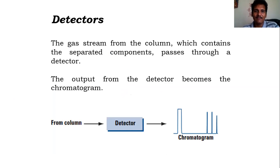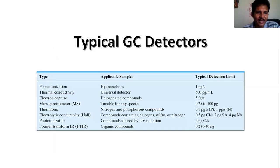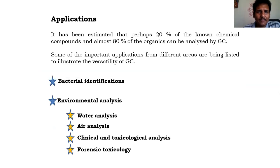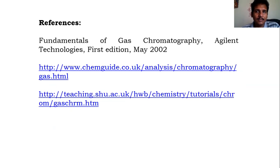Several detectors are available, including flame ionization detector, thermal conductivity detector, electron capture detector, and mass spectrometry. GC coupled with mass spectrometry — GC-MS — is a very well-known technique. Applications of gas chromatography include bacterial identification, environmental analysis, water and air analysis, clinical and toxicology analysis, and forensic technology. This covers the basic principles of gas chromatography.